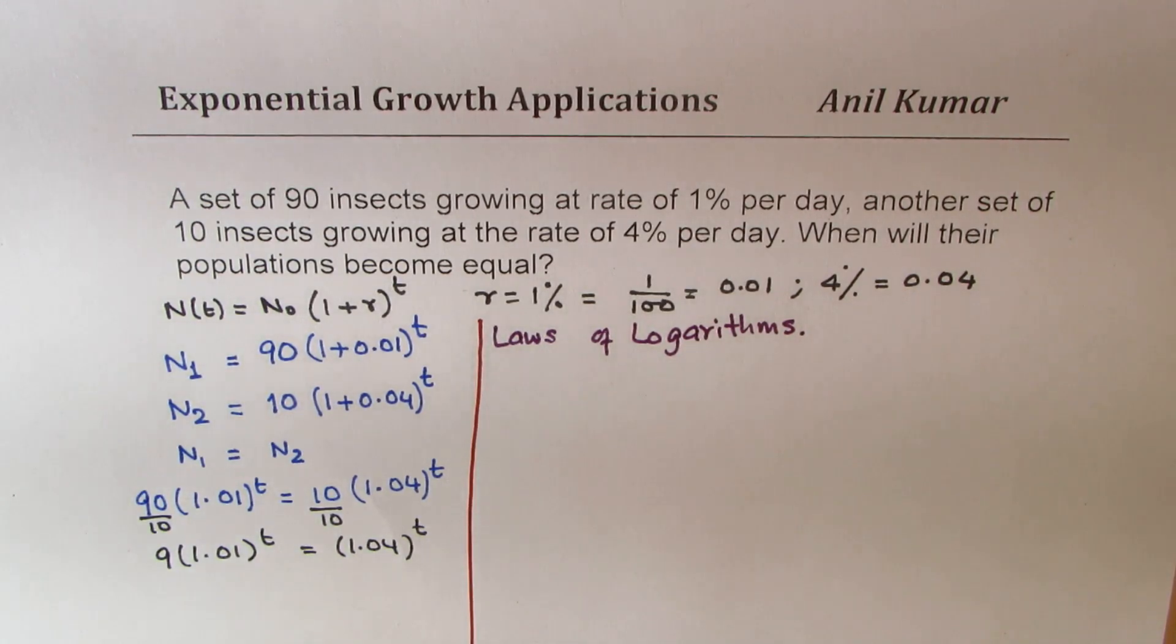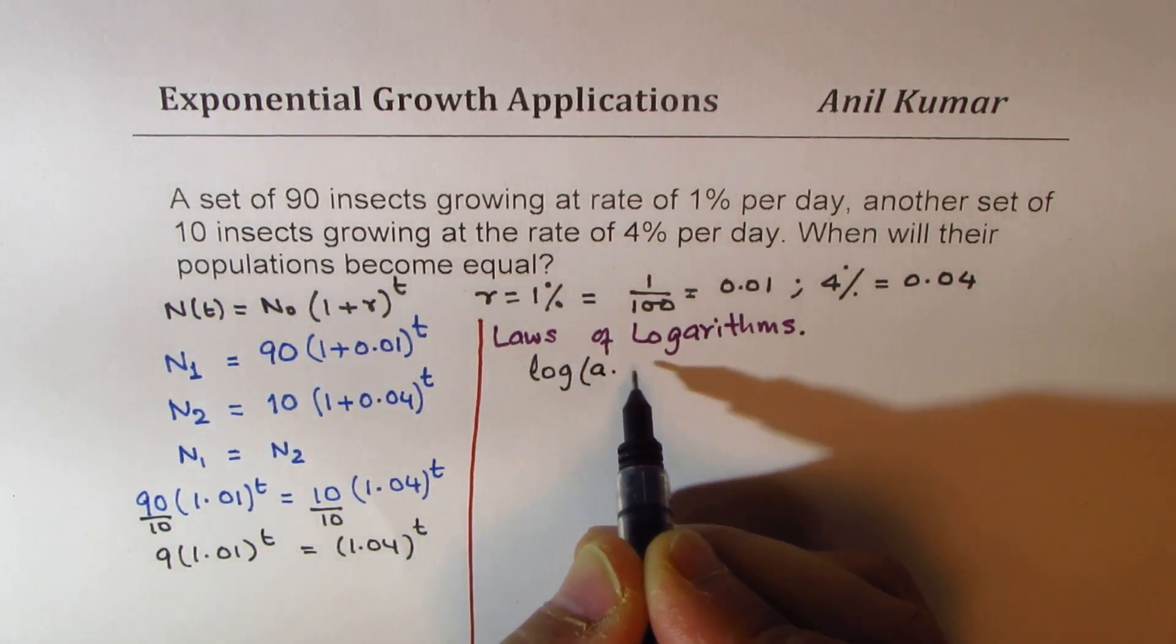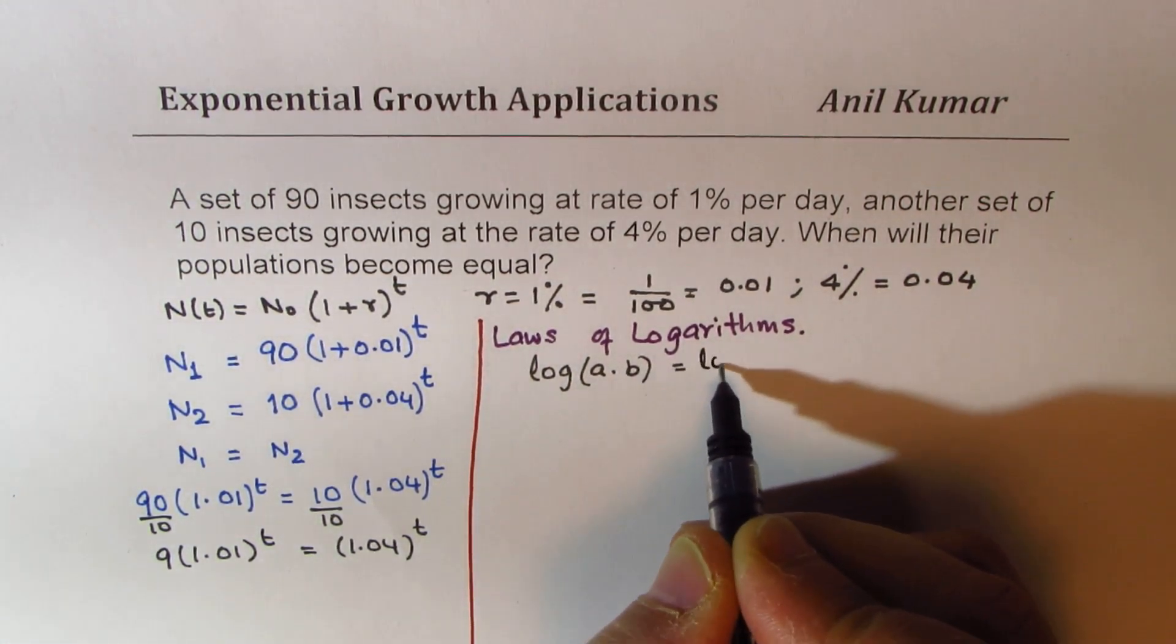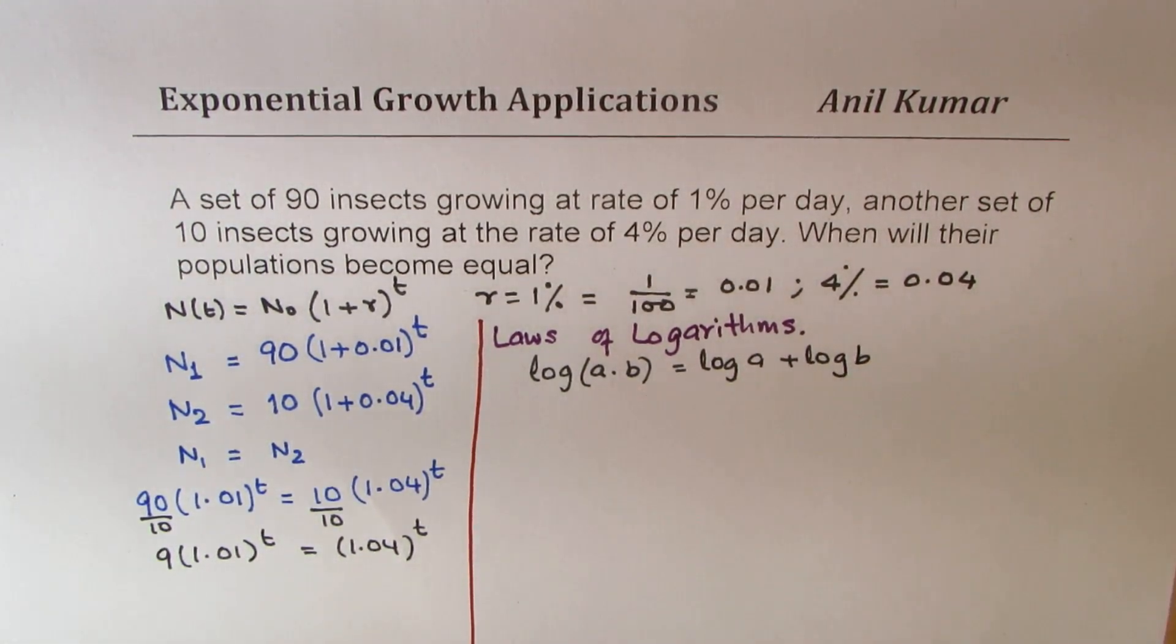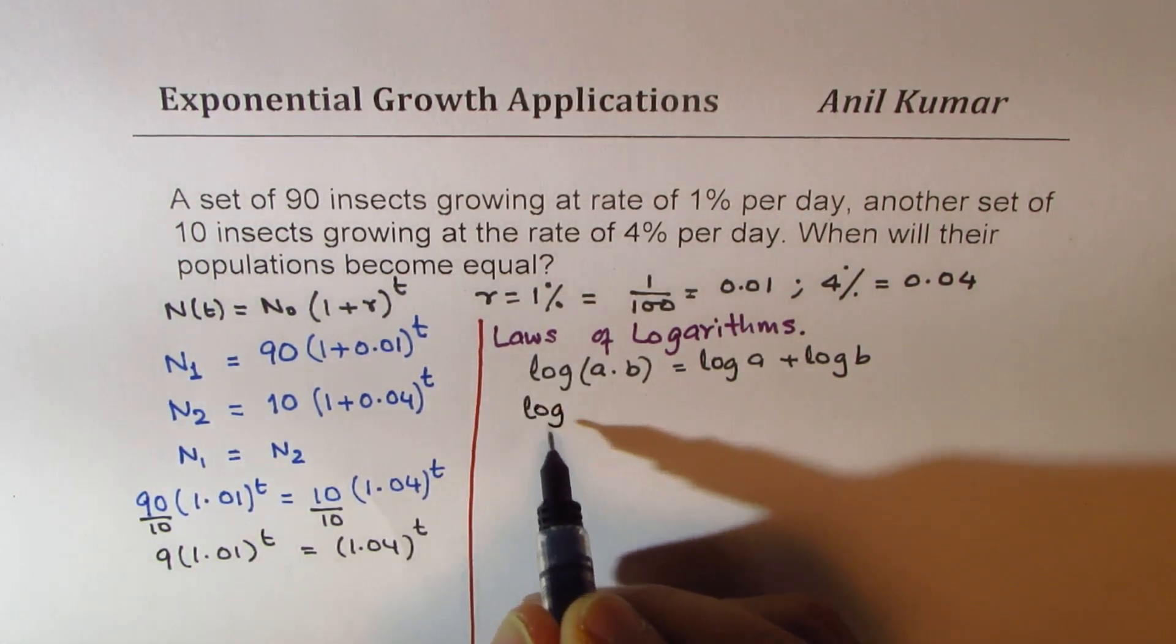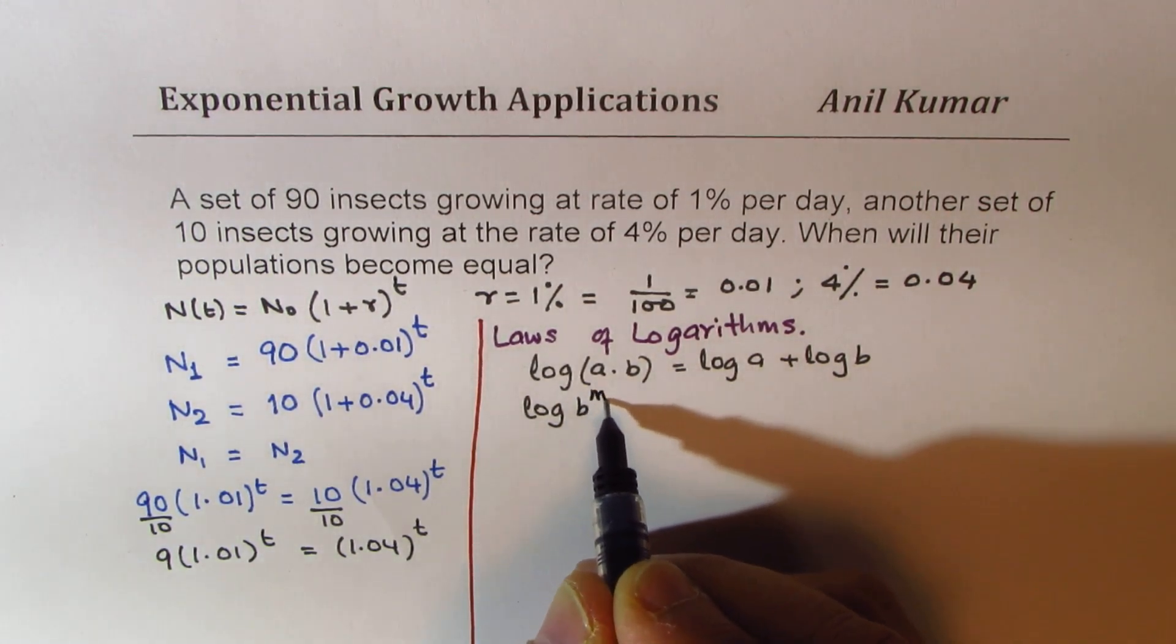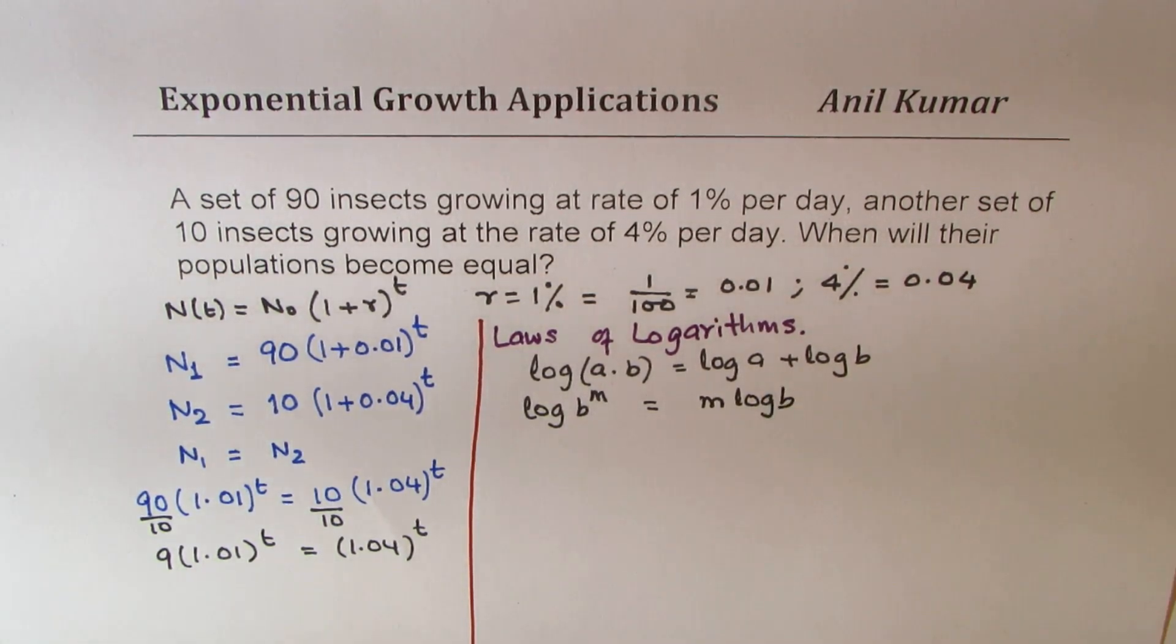So basically, we are going to use two laws of logarithm. One is here we see a product and also a power. So if I am taking log of a times b, then it could be written as log of a plus log of b. Second is that if I have log of b to the power of m, then that could be written as m times log of b. So these are the two properties of logarithms which we are going to use to solve this equation further.